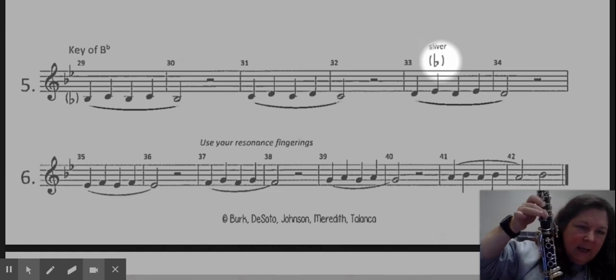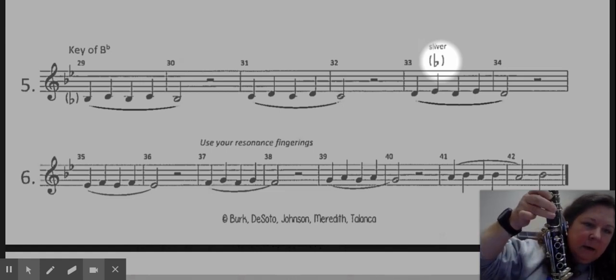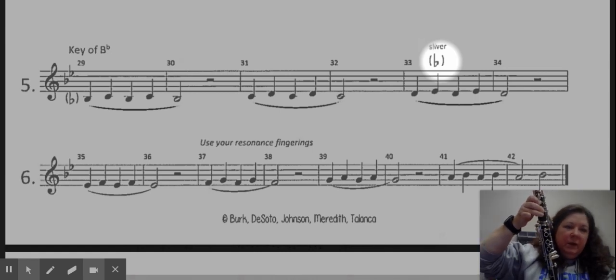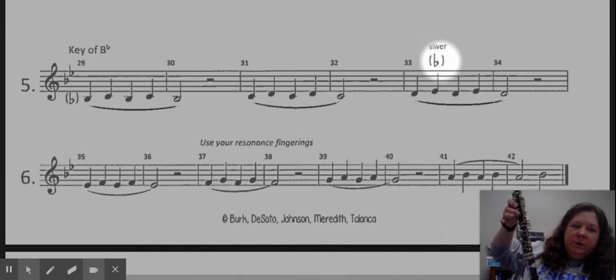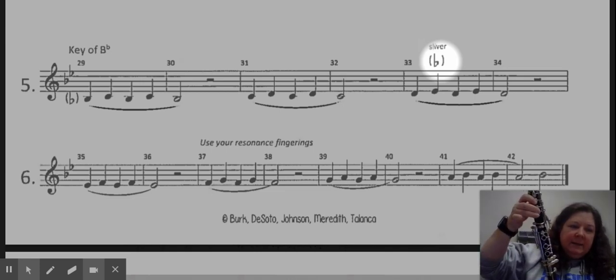So if I have thumb one, two, and this tiny little banana key right here, or the sliver, that is the fingering that we're going to be using for the E flat. So we're going to be going between D thumb one, two, and E flat sliver.